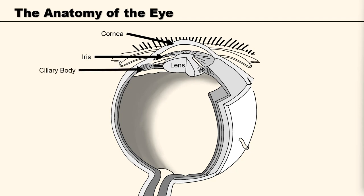The ciliary body is part of the eye that includes the ciliary muscle, which controls the shape of the lens, and the ciliary epithelium, which produces the aqueous humour that sits in the anterior compartment between the cornea and the lens. The ciliary body joins to the lens by the suspensory ligaments. The suspensory ligament acts to suspend the lens in the eye and stretch and flatten the lens under instruction from the ciliary body, allowing for accommodation.